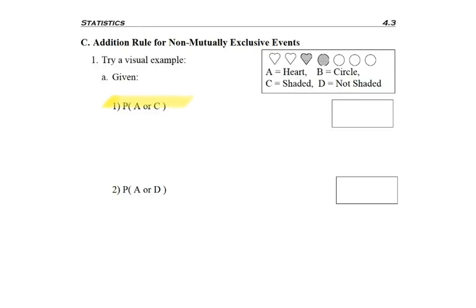So in problem one below, I'm asked to find the probability of A or C. And according to that legend, I want a heart or a shaded piece. So as we look above, we would count the first piece,